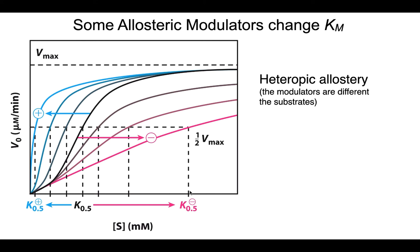So allosteric inhibitors increase the K0.5 when bound to the enzyme. When we add activators, we see the opposite — activators decrease the K0.5, making the enzyme able to bind better to its substrate. When the modulator — whether inhibitor or activator — is a different molecule than the substrate itself, that is called heterotropic allostery.